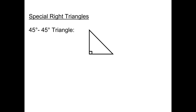In this video, we are going to take a look at some special right triangles. The first one we're going to look at is a 45-45 triangle. What that means is this angle is 45 degrees and this angle is 45 degrees. I would like to find the sine, cosine, and tangent of 45 degrees.